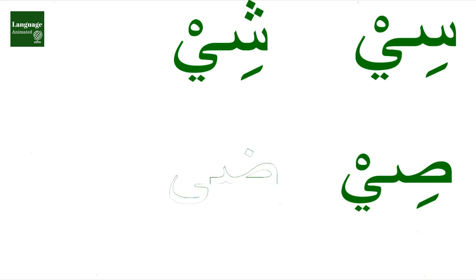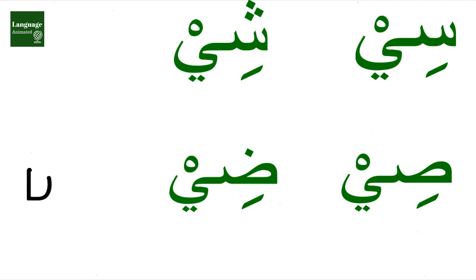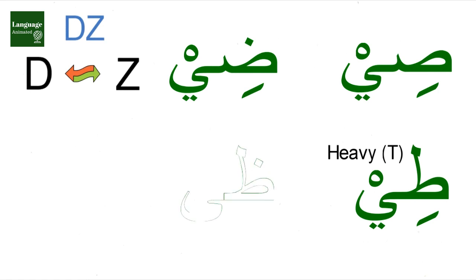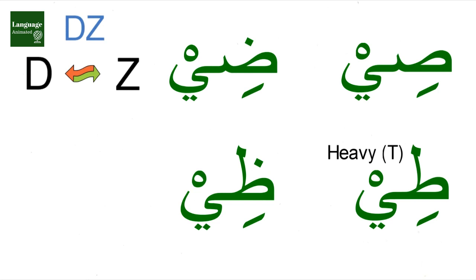Dee, Dee. It's almost like Dee but it's not Dee — it is between Dee and Zee. Dee, Dee, Dee. It's like heavy Tee, like Dee. Dee, Dee. It's not like Zee and Dee but it is like Zee.